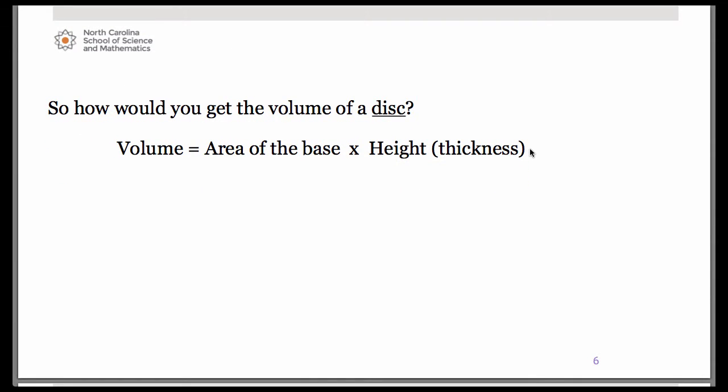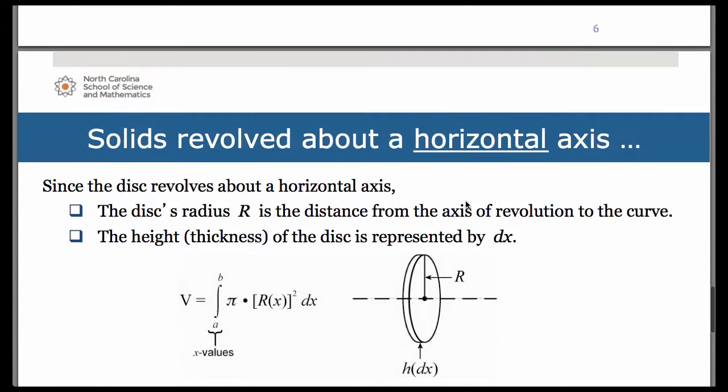Well think, we're talking disks, so the area of the base is πr² because it's circular. And the height or thickness, that's going to be either dx or dy because remember we're talking really skinny disks. Maybe a coaster, a flat coaster, you know the cardboard kind that you see in restaurants on which you put a drink. Think something like that.